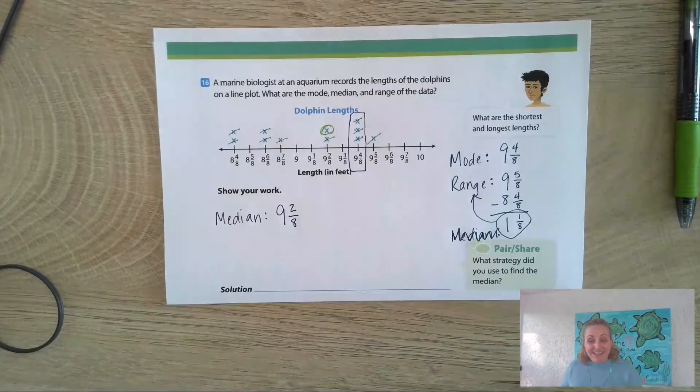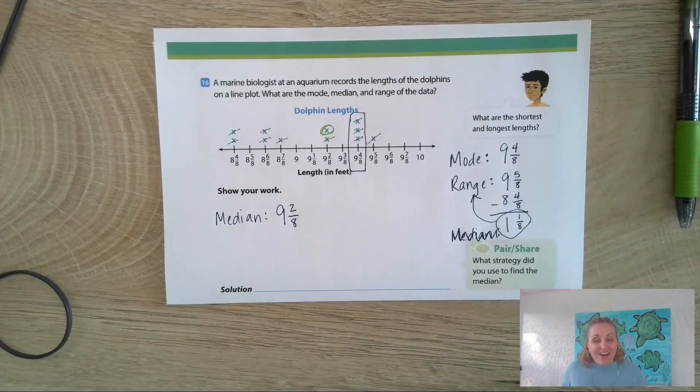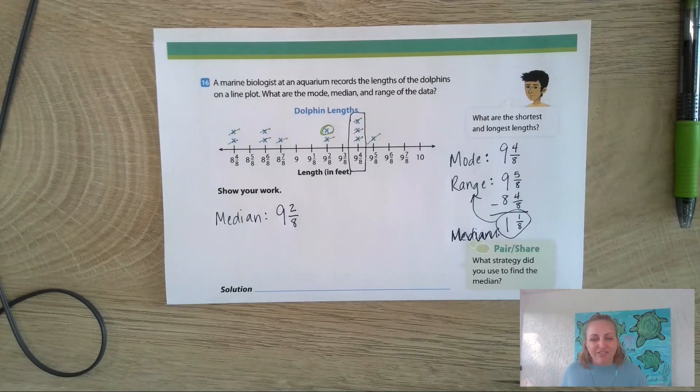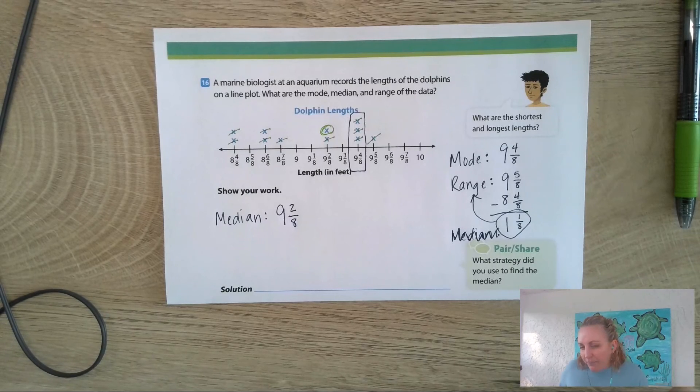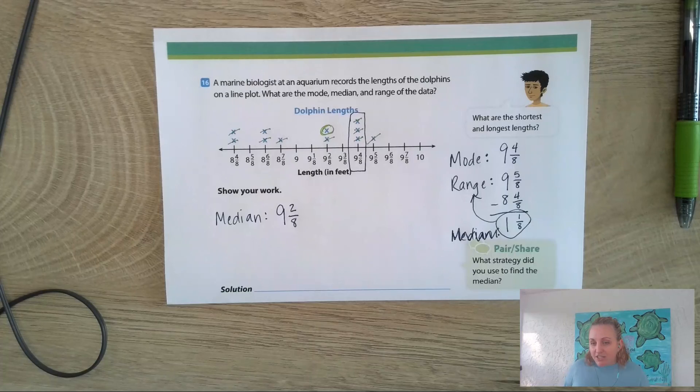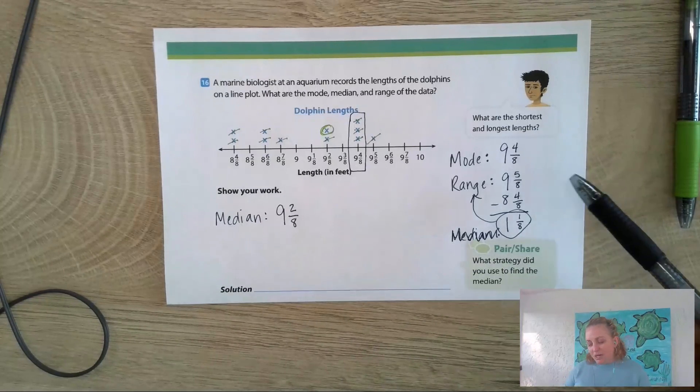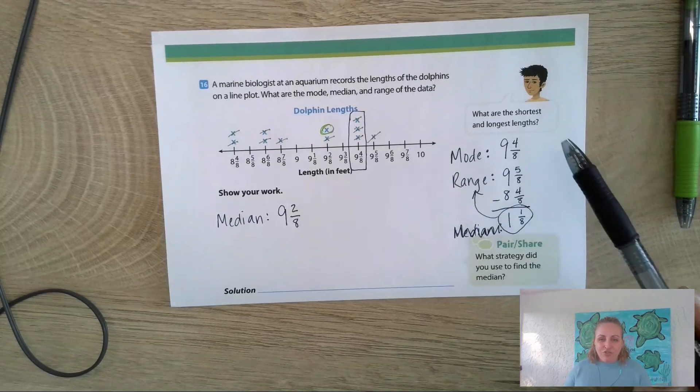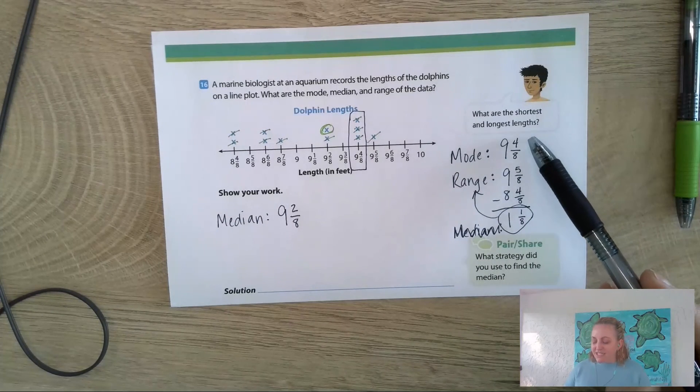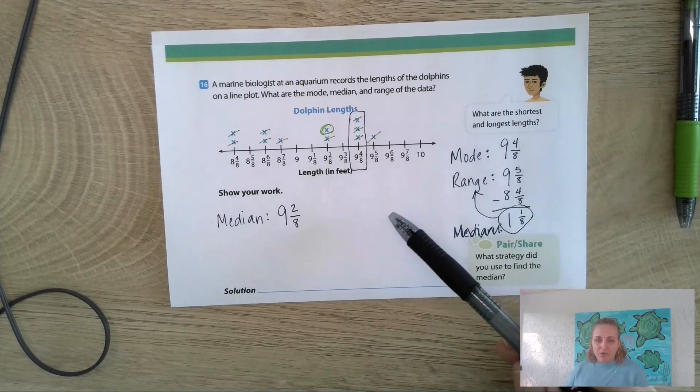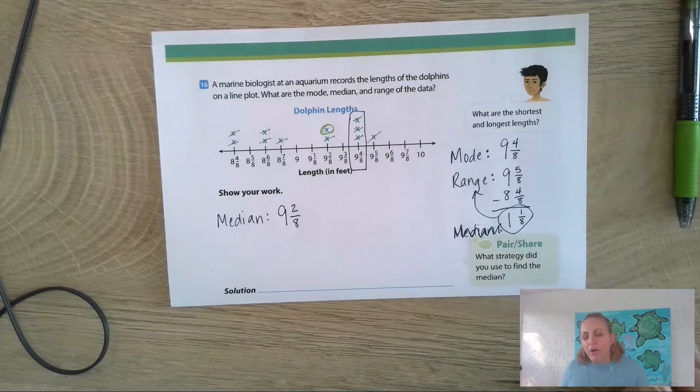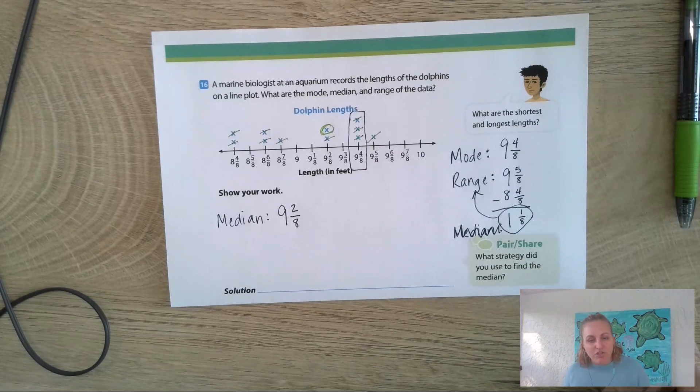Is that what you got? If you did, awesome, that's amazing. If you didn't, I want you to try and figure out where you made your mistake. Did you try and find the median a different way? Did you make a mistake subtracting? Did you forget that mode means the most often, not the most number? What was the mistake that you made that caused you to miss that problem?